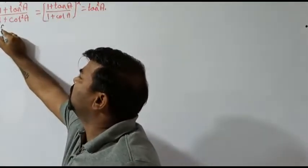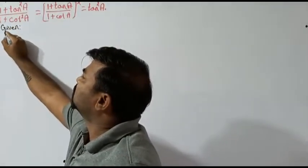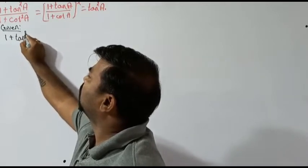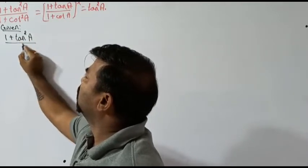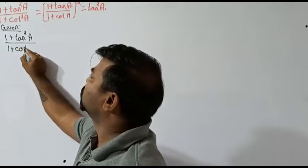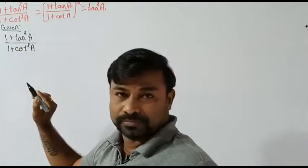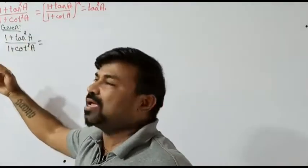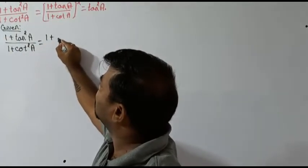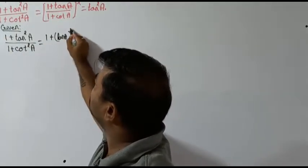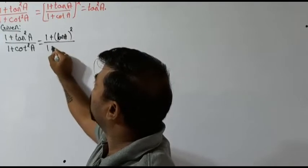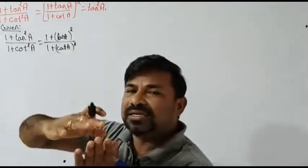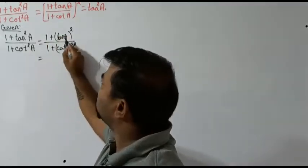Let's start. What is given to us is one plus tan square a by one plus cot square a. Now, in place of tan square a I can write tan a whole square, and in place of cot square a I can write cot a whole square — I have simply moved the power to indicate a squared quantity.